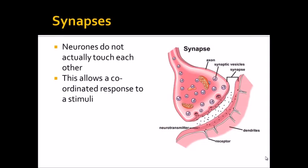Thanks for joining me. This is my third video on the nervous system and we're going to be looking at synapses today. You can see on this diagram that you've got two different cells here, a pre-synaptic cell and then a post-synaptic cell.